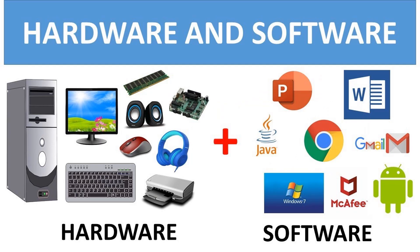A computer is made up of hardware and software. Hardware refers to the physical parts of the computer that can be touched. Examples are monitor, CPU, keyboard, motherboard, scanner, printer and speakers.